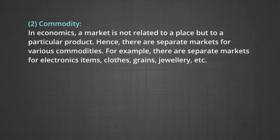Number two, commodity. In economics, a market is not related to a place, but to a particular product. Hence, there are separate markets. For example, there are separate markets for electronics items, clothes, grains, jewelry, etc.